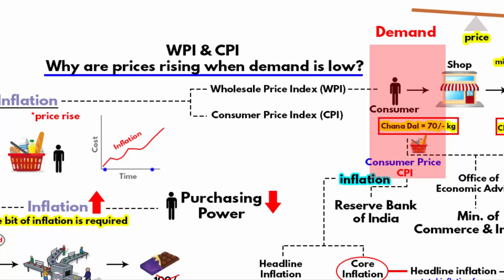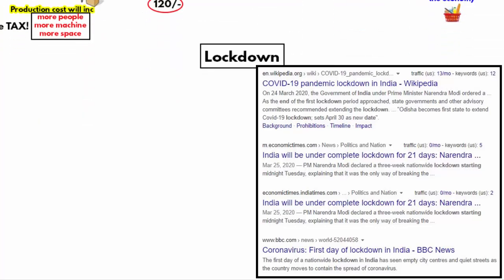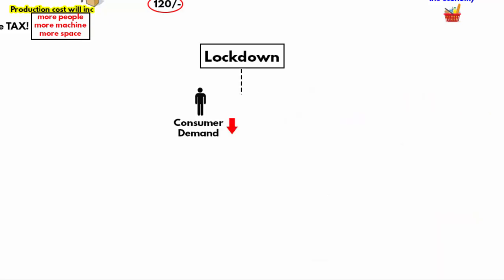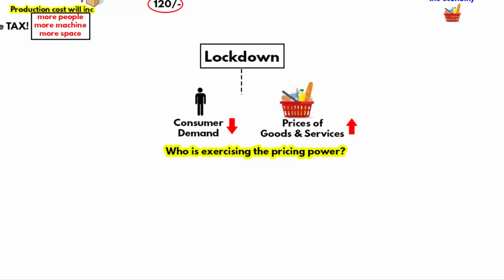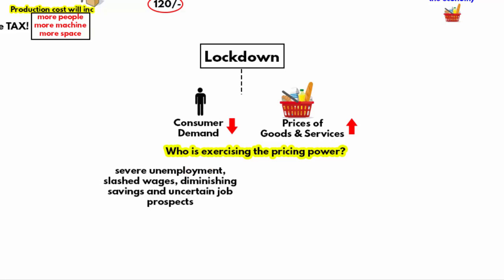The question is: why are prices rising despite low demand? For 7 months, due to the pandemic, there was a worldwide lockdown, still continuing in many places. Demand from the consumer side has slumped, yet commodity prices have increased. In this situation, you have to figure out who is exercising the pricing power. During these 7 months, the government imposed lockdowns and restrictions on businesses and mobility, causing severe unemployment, slashed wages, diminishing savings, and uncertain job prospects — making it clear that the consumer side is not exercising the pricing power.